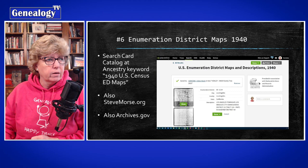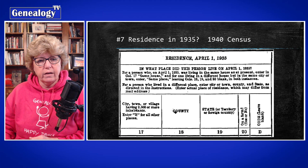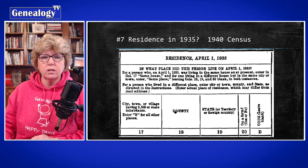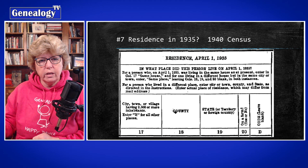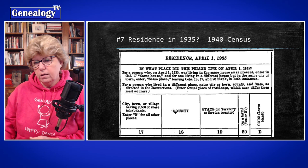Tip number seven is about the 'residence in 1935' question in the 1940 census. The 1940 census had a lot of great information, and one question asked was 'where were you in 1935?' That helps fill in the gap between 1930 and 1940 — it helps pinpoint a location in your timeline for your ancestors.